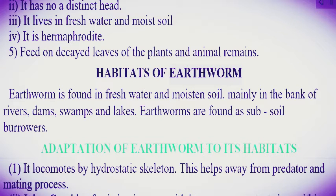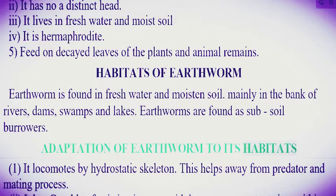Habitat of earthworm: earthworm is found in fresh water and moistened soil, mainly on the banks of rivers, dams, swamps, and lakes. Earthworms are found as subsoil burrowers. Adaptation of earthworm to its habitat: one, it locomotes by hydrostatic skeleton, which helps it move away from predators and during the mating process.